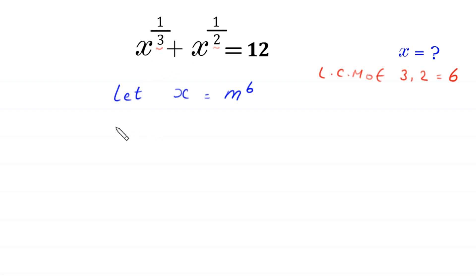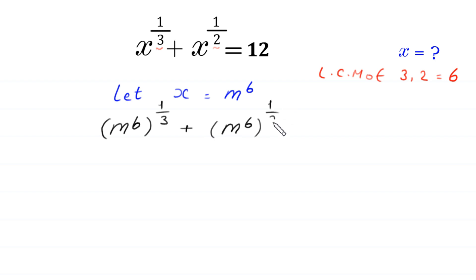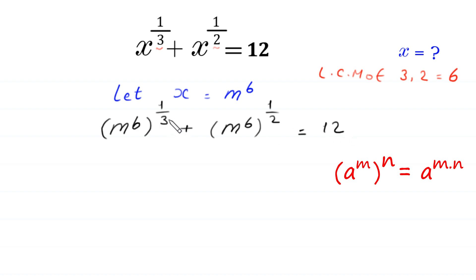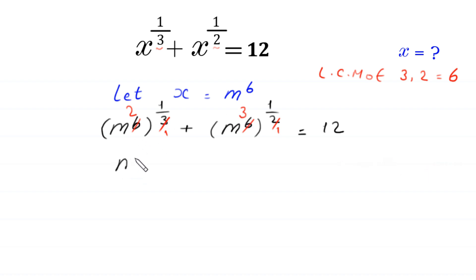Then this equation will become m to the power 6, whole to the power 1 over 3, plus m to the power 6, whole to the power 1 over 2, is equal to 12. By using the power rule — A to the power m, whole to the power n, equals A to the power m times n — we are left with m squared plus m cubed is equal to 12.